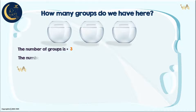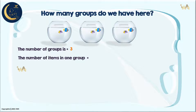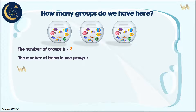How many fish are in each group? Let's count together. One, two, three, four, five, six, seven, eight, nine, ten. We have ten fish in each group.